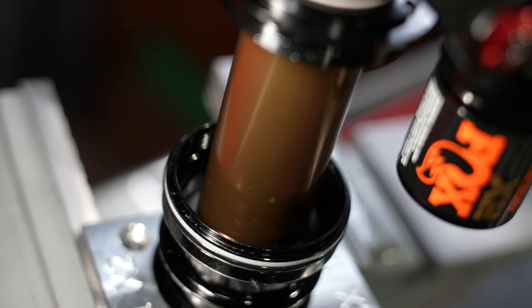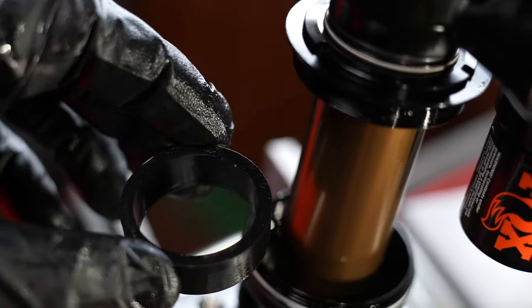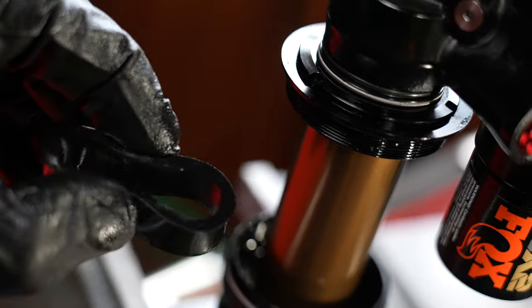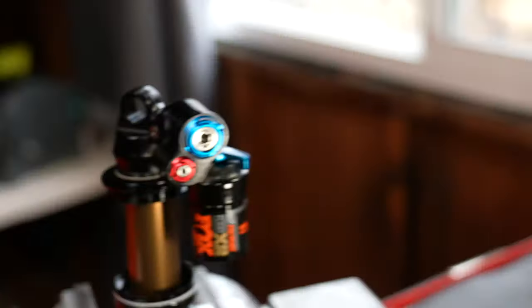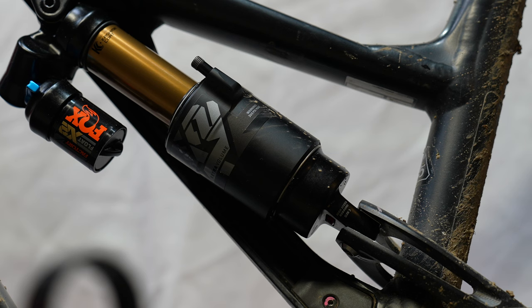So, this is the negative chamber within the Fox Float X2, and it's absolutely massive, and that's why this shock has so much small bump sensitivity. This foam O-ring is a massive negative token, hence why the shock rides so much different than all the other previous models.